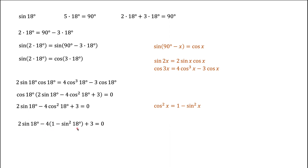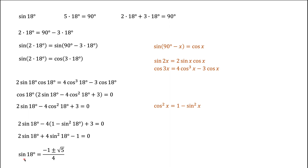We open the parentheses and get a quadratic equation in sine of 18 degrees, which we know how to solve. There are two solutions — one with a plus sign and one with a minus sign. Since 18 degrees is in the first quadrant, sine of 18 degrees is positive, so we take the plus sign and discard the minus. That gives us the final answer for sine of 18 degrees.